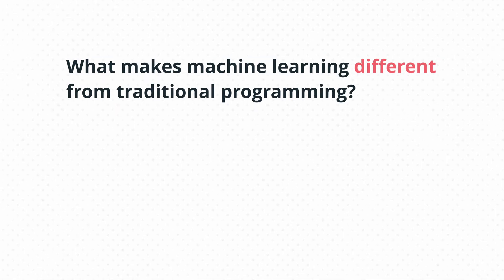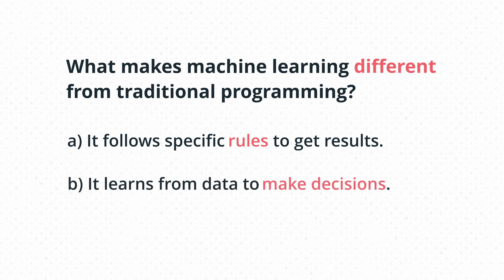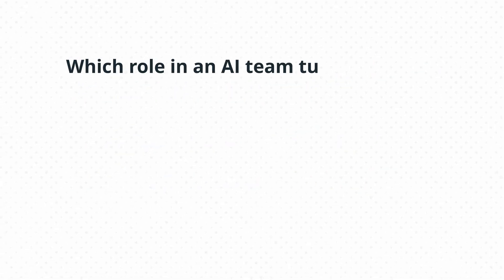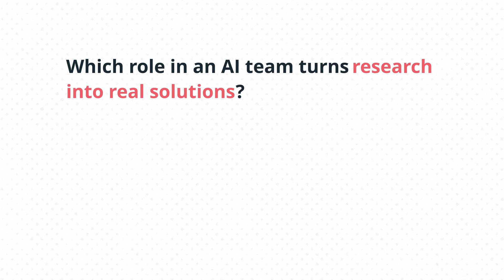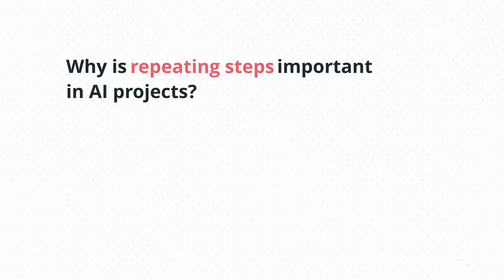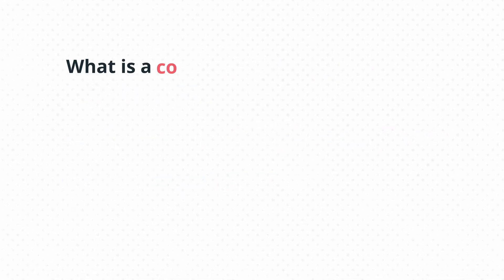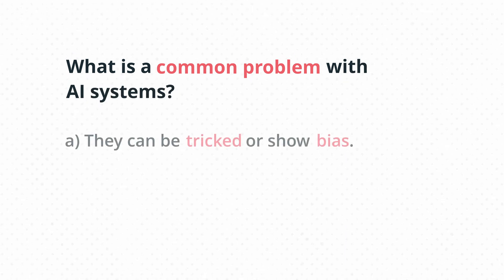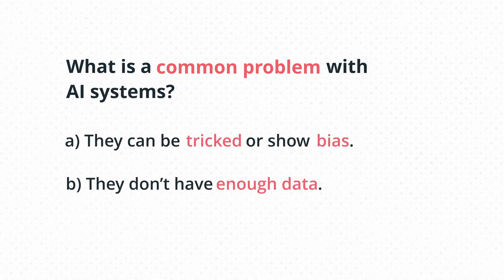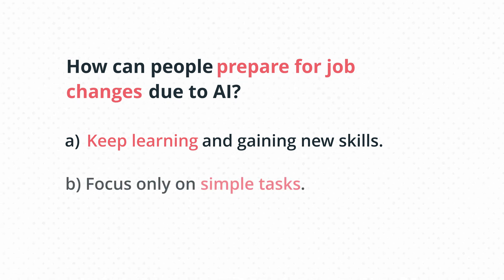Question one: What makes machine learning different from traditional programming? A) It follows specific rules to get results. B) It learns from data to make decisions. Question two: Which role in an AI team turns research into real solutions? A) Machine learning researcher. B) Applied machine learning scientist. Question three: Why is repeating steps important in AI projects? A) To improve models based on real feedback. B) To finish projects faster. Question four: What is a common problem with AI systems? A) They can be tricked or show bias. B) They don't have enough data. Question five: How can people prepare for job changes due to AI? A) Keep learning and gaining new skills. B) Focus only on simple tasks.